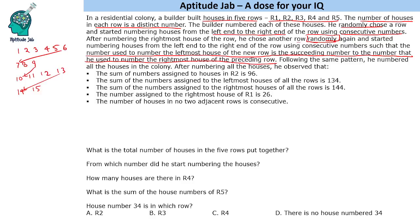We are given certain conditions, and based on them we need to find out which house is in which row and what numbers are used. The number assigned to the right-most house of R1 is 26. So the last house in R1 is 26, though we don't know how many houses are there. Also, the sum of numbers assigned to houses in R2 is 96.